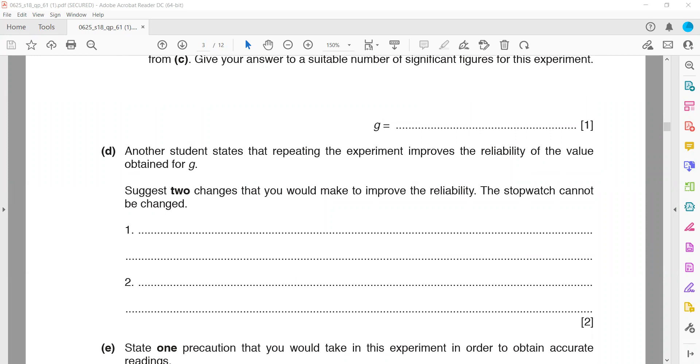What we are changing: we are changing the distance and measuring the time interval. What changes can we do? We can change d, or we can measure the time for 20 vibrations.